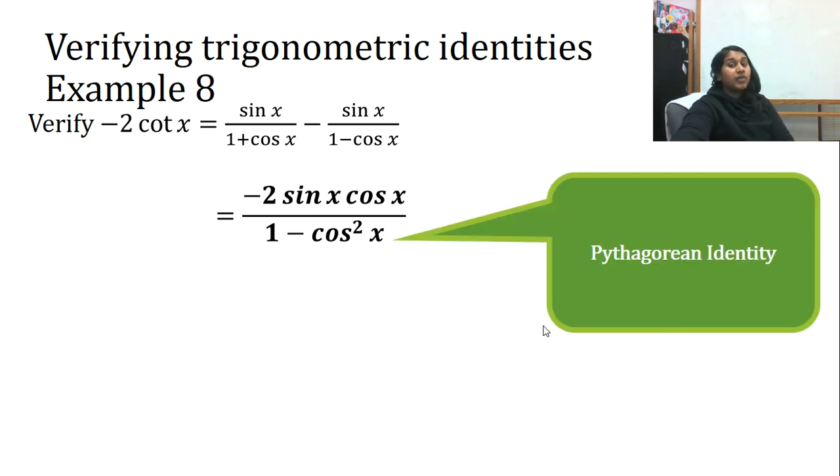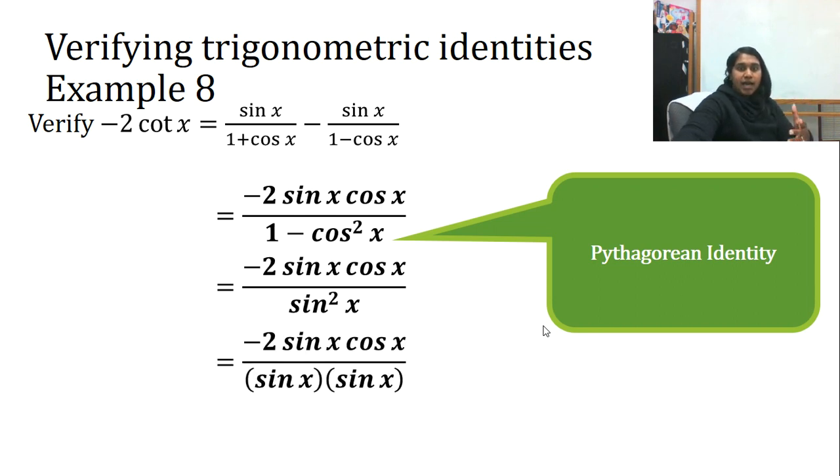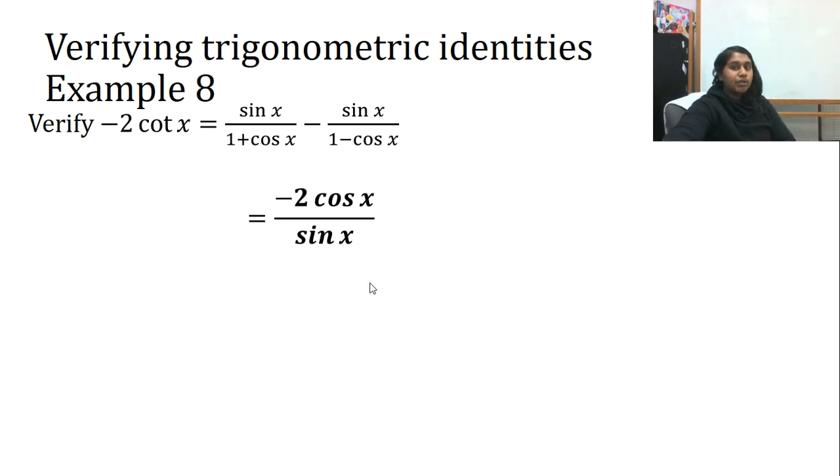So I end up with negative two sine x cosine x all over one minus cosine squared. Hey, one minus cosine squared is a Pythagorean identity. So I'm going to change it to sine squared. And because I have sine squared, some of us need to see that physically - if I have one sine up top and two signs down bottom, how many am I actually removing? Only one. Here's another common mistake I see - kids will just go ahead and remove this entirely. That doesn't work.